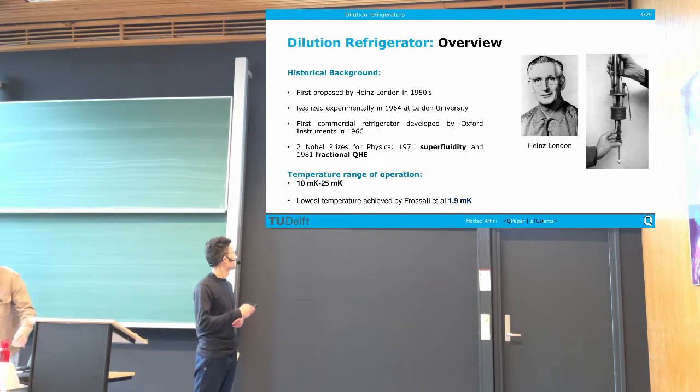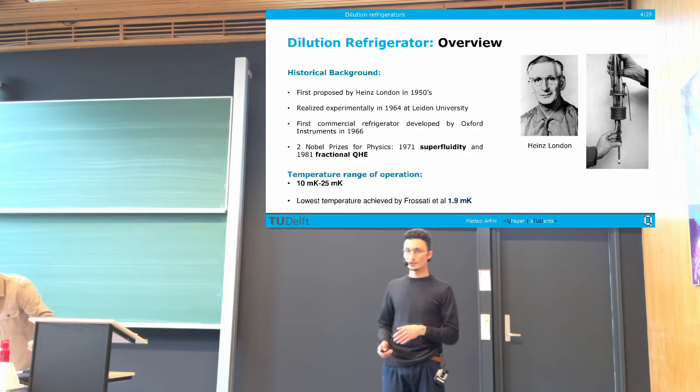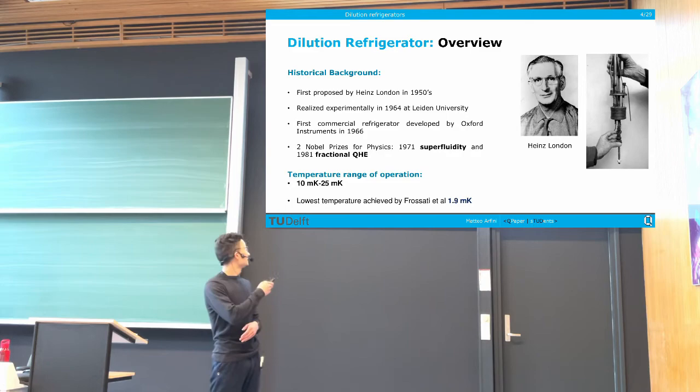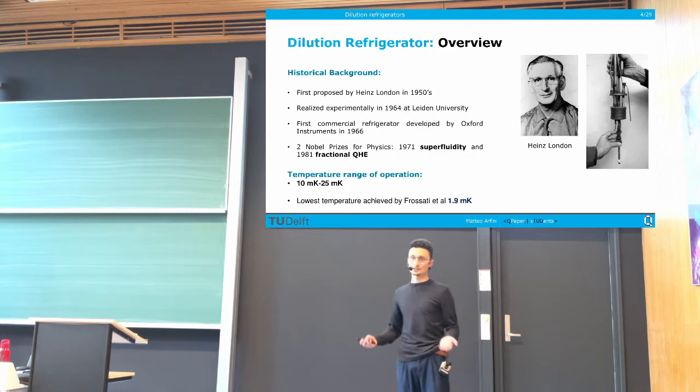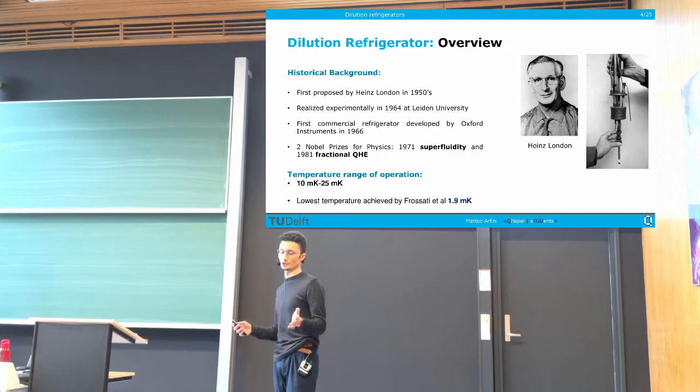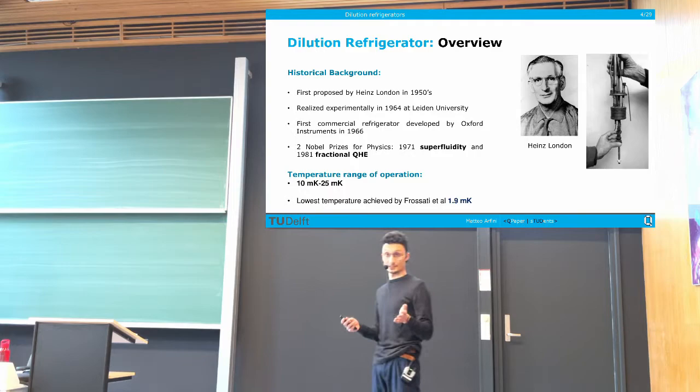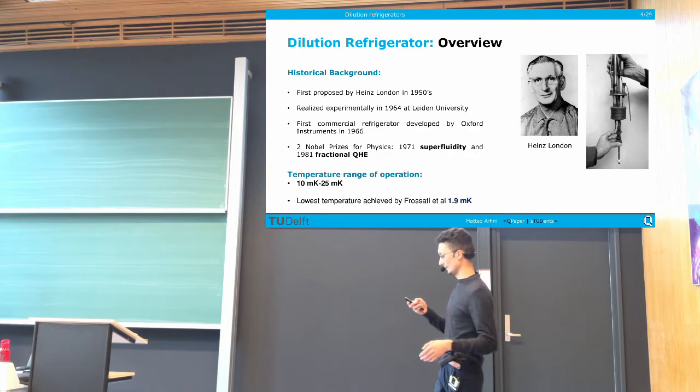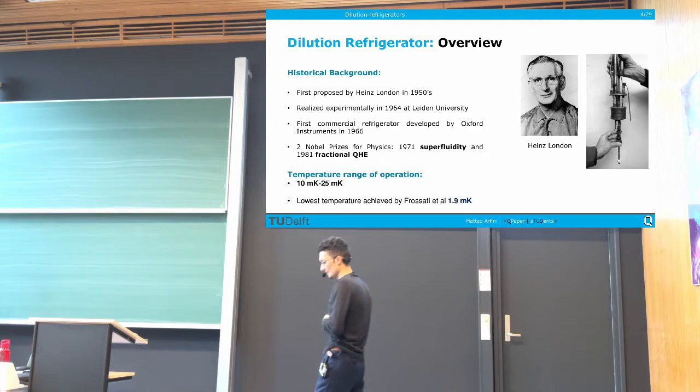Dilution refrigerators were first proposed in the 1950s by Hans London. Hans London was one of the pioneers in the development of the theory of superconductivity. He, along with his brother, is famous for the London equations, which enabled us to describe the main features of superconductivity — not microscopically, because for that we need BCS theory. It was proposed in the 1950s but then realized experimentally here in the Netherlands, in 1964, at Leiden University.